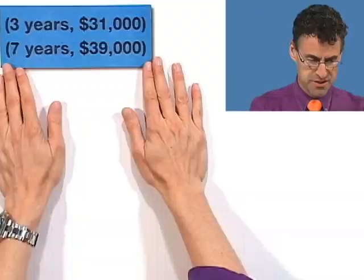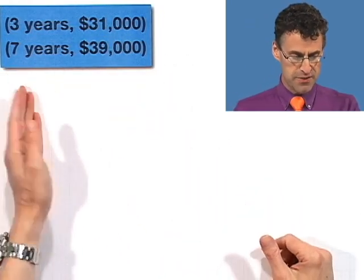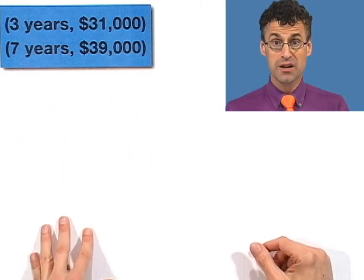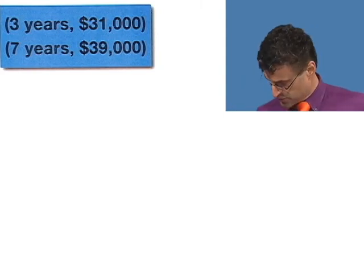Okay, so first let's just start with the basics here. What we know is that three years after I purchased the work of art, it was worth $31,000, and then seven years from when I purchased it, it was worth $39,000. So we want to model this with a straight line, so we have to do a bunch of things. We first will have to find the slope.